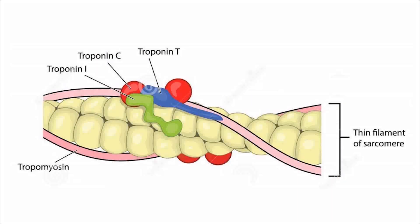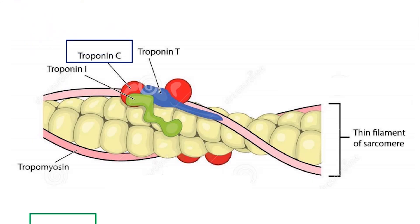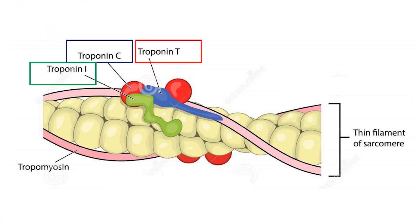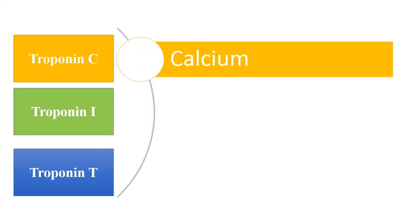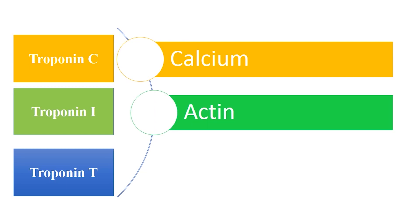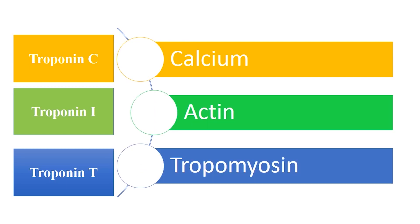Troponin has three subunits: troponin C, troponin I, and troponin T. Troponin C is a calcium binding site. Troponin I binds with actin. Troponin T binds with tropomyosin.